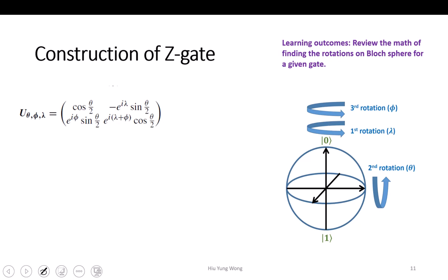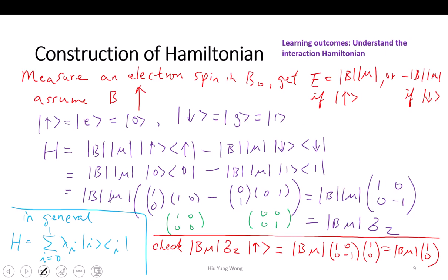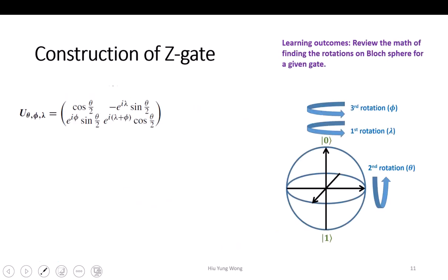Construction. So now we know that we have constructed the Hamiltonian. But I want to show you this Hamiltonian is actually just can be used to construct the Z-gate.